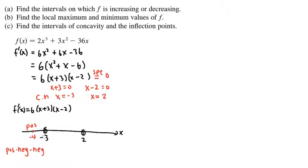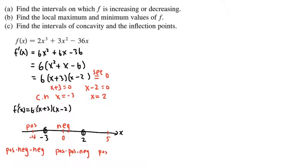For the interval between negative 3 and 2, we pick 0. The 6 is always positive. Plugging 0 into x plus 3 gives positive 3. Plugging 0 into x minus 2 gives negative 2. Positive times negative gives a negative first derivative on this interval. For the last part, we pick a number bigger than 2, say 5. The 6 is positive. 5 plus 3 is positive 8, and 5 minus 2 is positive 3, so altogether this gives a positive result.